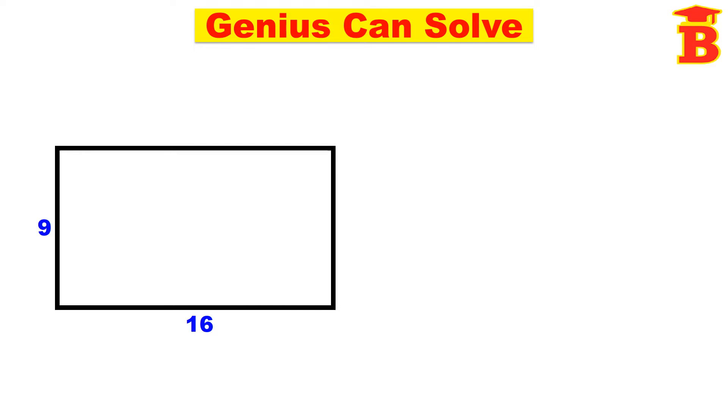Welcome to our channel Bright Mass. See the picture shown. It is in the shape of a rectangle with dimensions 16 by 9. That means the length of the rectangle is 16 units and the breadth of the rectangle is 9 units.